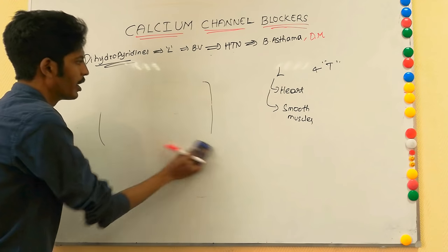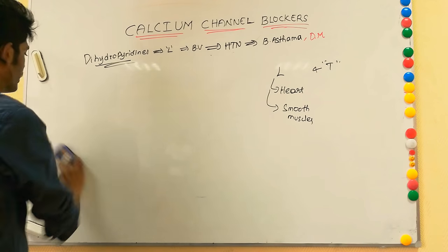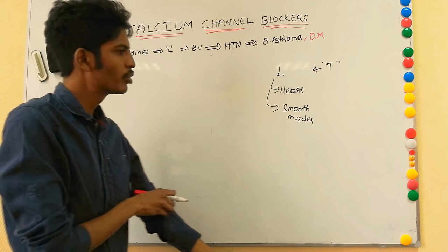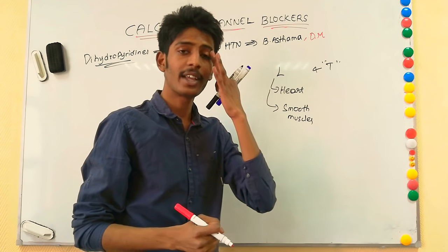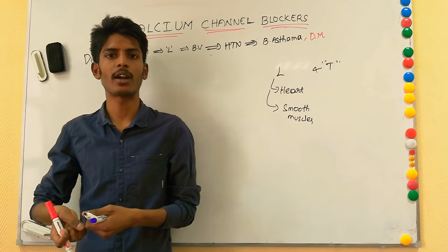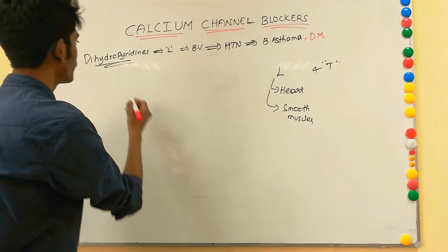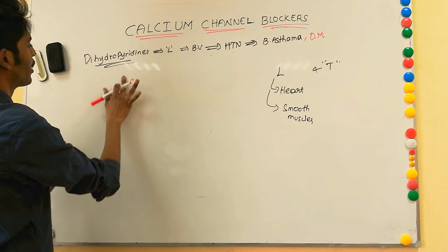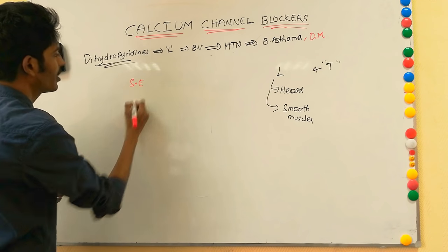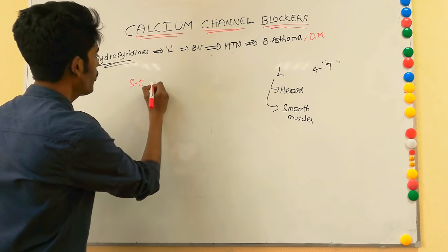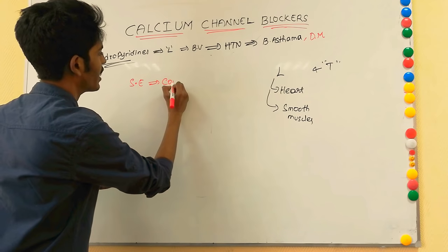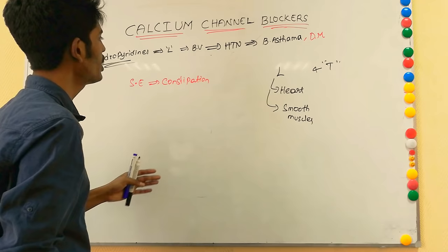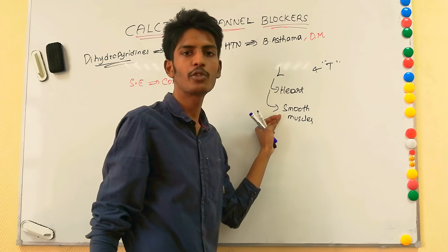In the intestine, which also has smooth muscles, if calcium cannot enter the smooth muscle cells, there is no smooth muscle contraction. Because of this property, calcium channel blockers have constipation as a side effect.